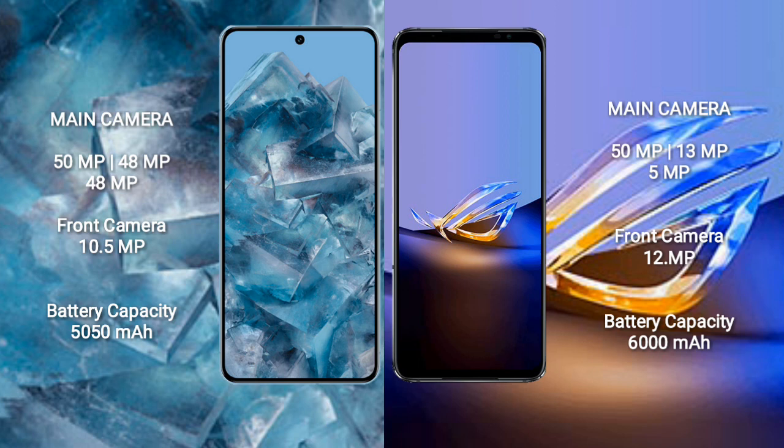Google Pixel 8 Pro features a triple rear camera setup: 50MP plus 48MP plus 48MP, and a 10.5MP front camera. ASUS ROG Phone 6D Ultimate features a triple rear camera setup: 50MP plus 13MP plus 5MP, and a 12MP front camera.